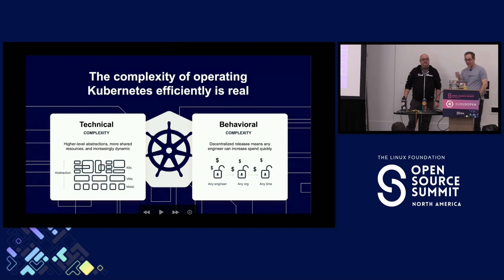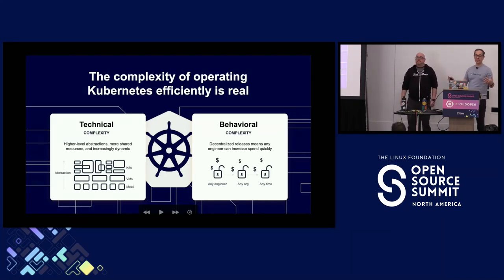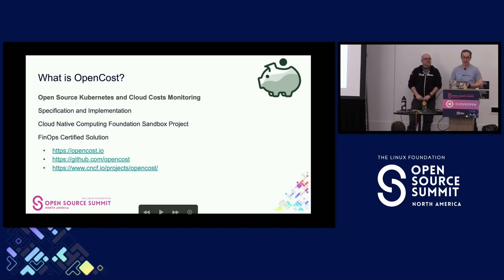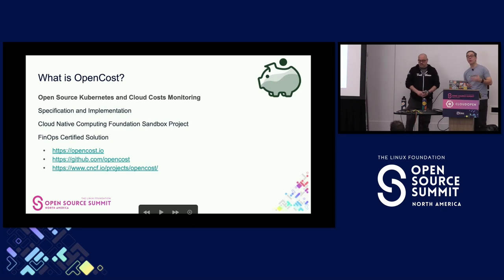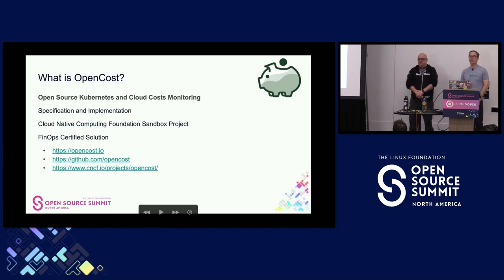Kubernetes is a very complex mechanism. It can do a lot of amazing things, but underneath the covers there's a lot going on. As you get more into it, more complexity gets exposed, and keeping track of how to operate it efficiently is a real problem. OpenCost is here to help you keep track of the cost of what you're doing. OpenCost is a CNCF project — completely open source, Apache licensed. It started focused on Kubernetes cost monitoring, but we've moved into general cloud costs and are moving into carbon costs and SaaS costs as well. OpenCost is a FinOps certified solution.